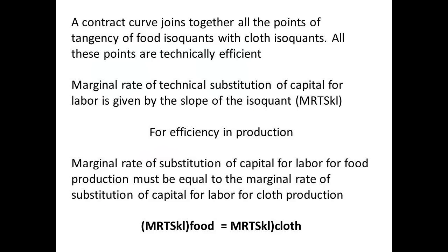All the points on the contract curve are technically efficient. Consider the slopes of the isoquants. The marginal rate of technical substitution of capital for labour is given by the slope of the isoquant. For efficiency in production, the slope for the isoquant for food will be equal to the slope for the isoquant for cloth. The marginal rate of technical substitution of capital for labour for food